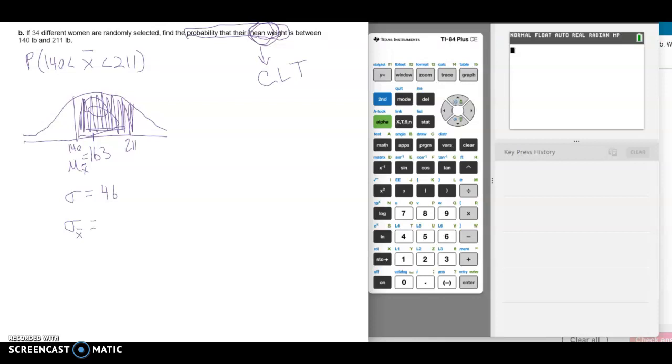And the formula for that is you're going to take sigma and divide it over the square root of your sample size n. So in our problem, we have 46 over the square root of n, and n is 34. You can go ahead and calculate that, but we're going to use our calculator just like we did in part A. And you can actually just type this information right into your calculator.